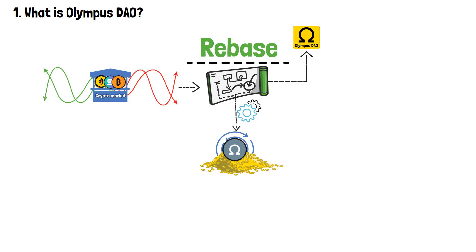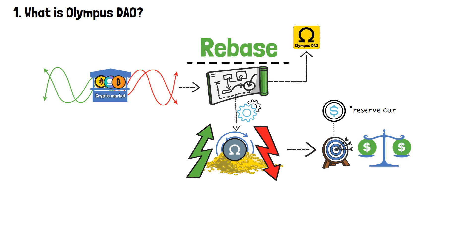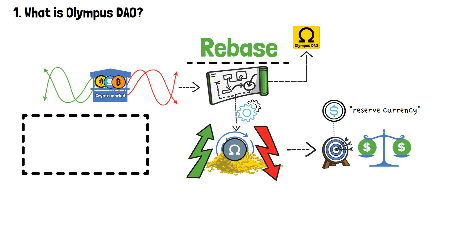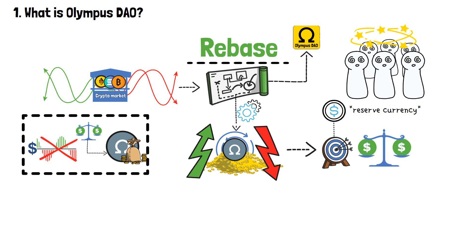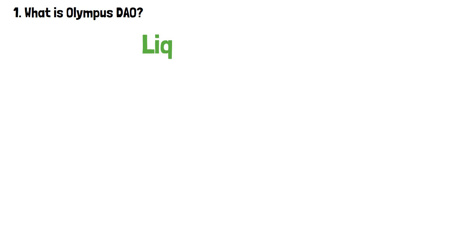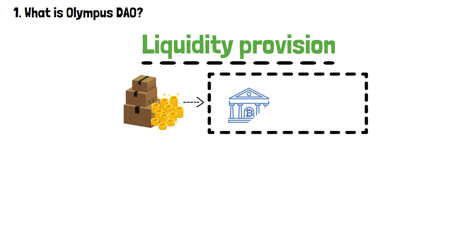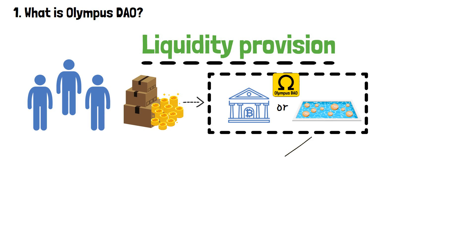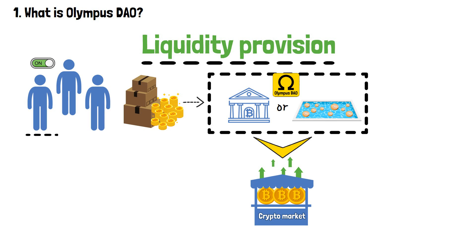Through this process, the supply of OM expands and contracts, aiming to maintain stability around a target price known as the reserve currency. This innovative approach mitigates volatility risks and ensures the stability of OM as a store of value. Lastly, liquidity provision involves the act of supplying assets to decentralized exchanges or liquidity pools within the Olympus DAO ecosystem. By providing liquidity, participants enhance the efficiency and depth of the market, enabling smooth trading and the seamless exchange of assets within the protocol.